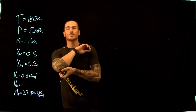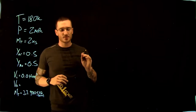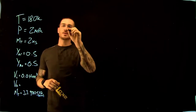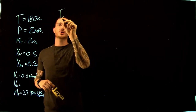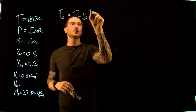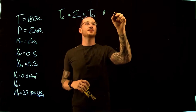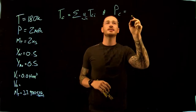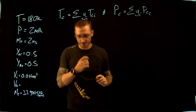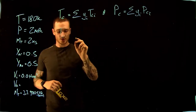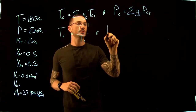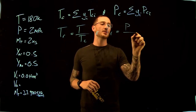Now let's find our volume using Kay's rule. Kay's rule estimates pseudo critical properties of mixtures as averages of pure component critical properties. The pseudo critical temperature is equal to the sum of the mole fraction times the critical temperature of each component, and the pseudo critical pressure similarly. We then find pseudo reduced temperature as temperature divided by pseudo critical temperature, and pseudo reduced pressure as pressure divided by pseudo critical pressure.